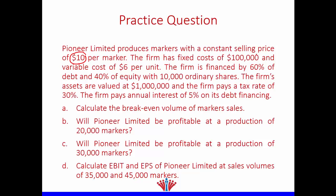The firm has a fixed cost of $100,000 and a variable cost per unit of $6. The firm is financed by 60% debt and 40% equity — you only need the debt percentage of 60%, since equity is one minus the debt ratio. There are 10,000 ordinary shares outstanding. The firm's assets are valued at $1 million, the tax rate is 30%, and the annual cost of debt is 5%.